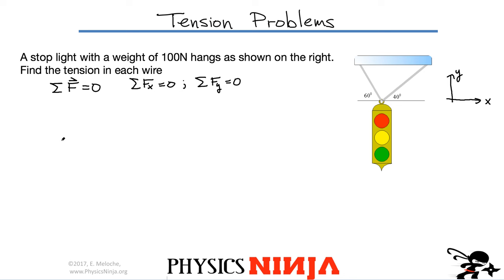So the next step, free body diagram. Let's represent this entire stoplight with a single point. It has a weight acting down. The magnitude of the weight is mg, and in this case I know it's 100 newtons. There's a wire that's connected here, and it makes an angle of 40 degrees. We're going to call this tension T1.